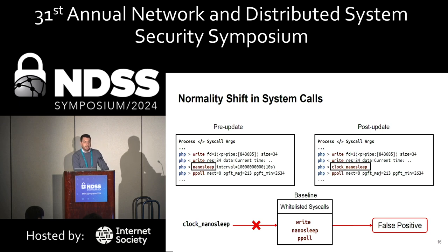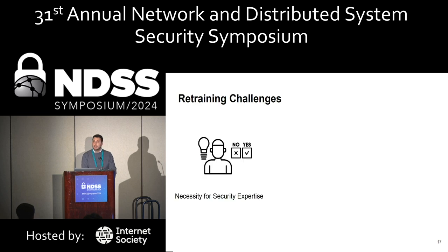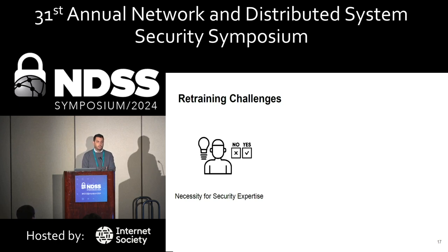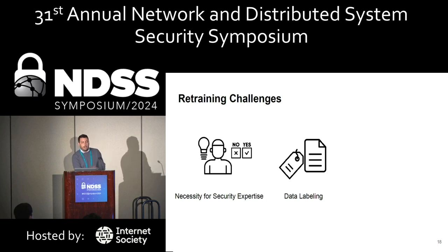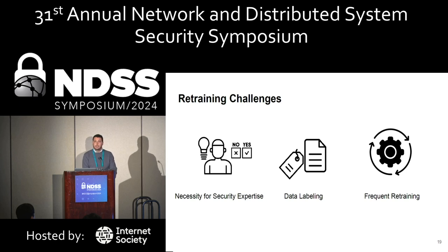Usually to handle this kind of problem, people retrain their baselines. But retraining in security applications can be really challenging. First, it requires security expertise — you need a man in the loop, a security expert able to distinguish between a normality drift and a real anomaly. Not only that, you need a labelled dataset, which can require a lot of effort and be very time-consuming. Last but not least, frequent retraining, especially in dynamic deployments like microservices, makes retraining really infeasible in these settings.